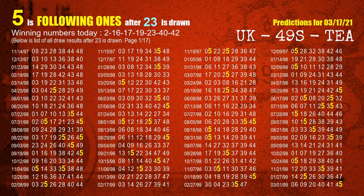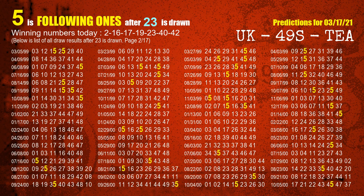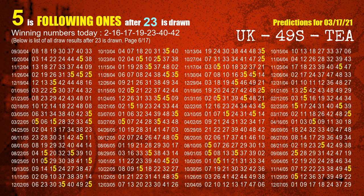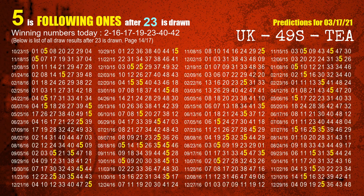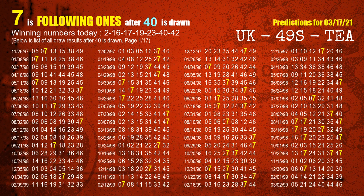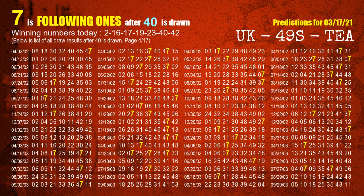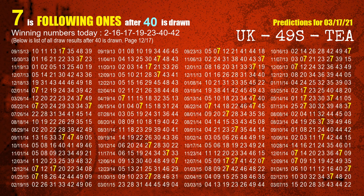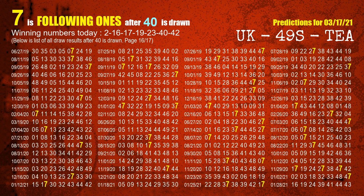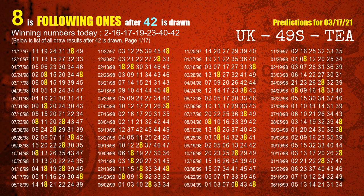The fifth winning number is 23. The most frequently following units digit is 5 when 23 is the winning number in the last draw. The sixth winning number is 40. The most frequently following units digit is 7 when 40 is the winning number in the last draw. The booster winning number is 42. The most frequently following units digit is 8 when 42 is the winning number in the last draw.